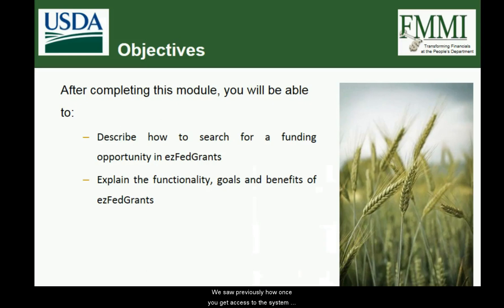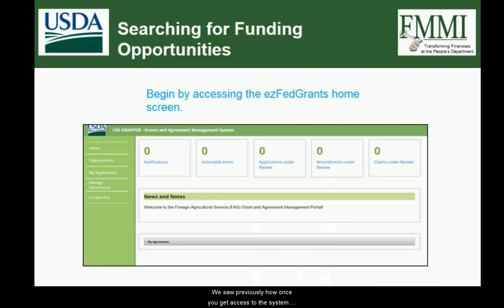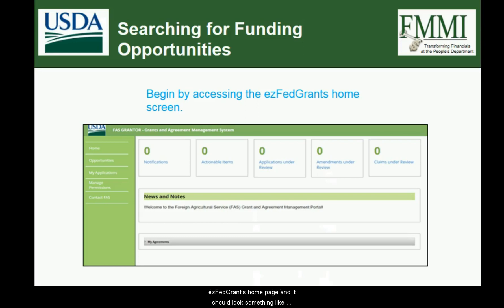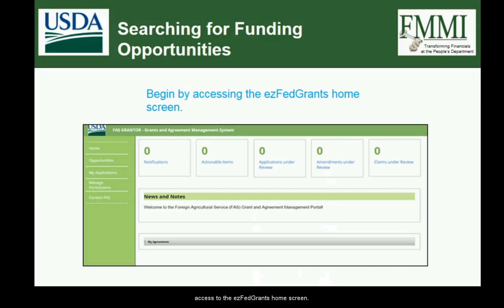Once you get access to the system — once you get that level 2 e-authentication access — you can go to the NFC website where you can click on the button to launch the EasyFed Grants application. Once you do that, it should take you to the EasyFed Grants home page, and it should look something like this. The first step to searching for a funding opportunity is to access the EasyFed Grants home screen.